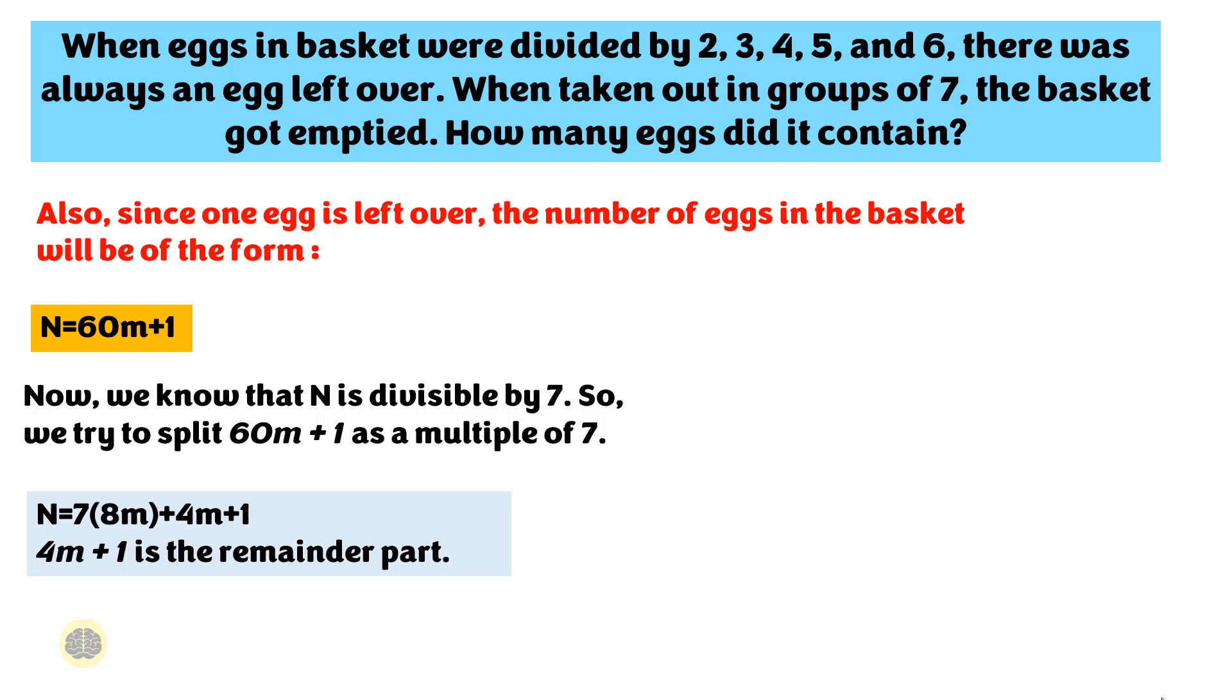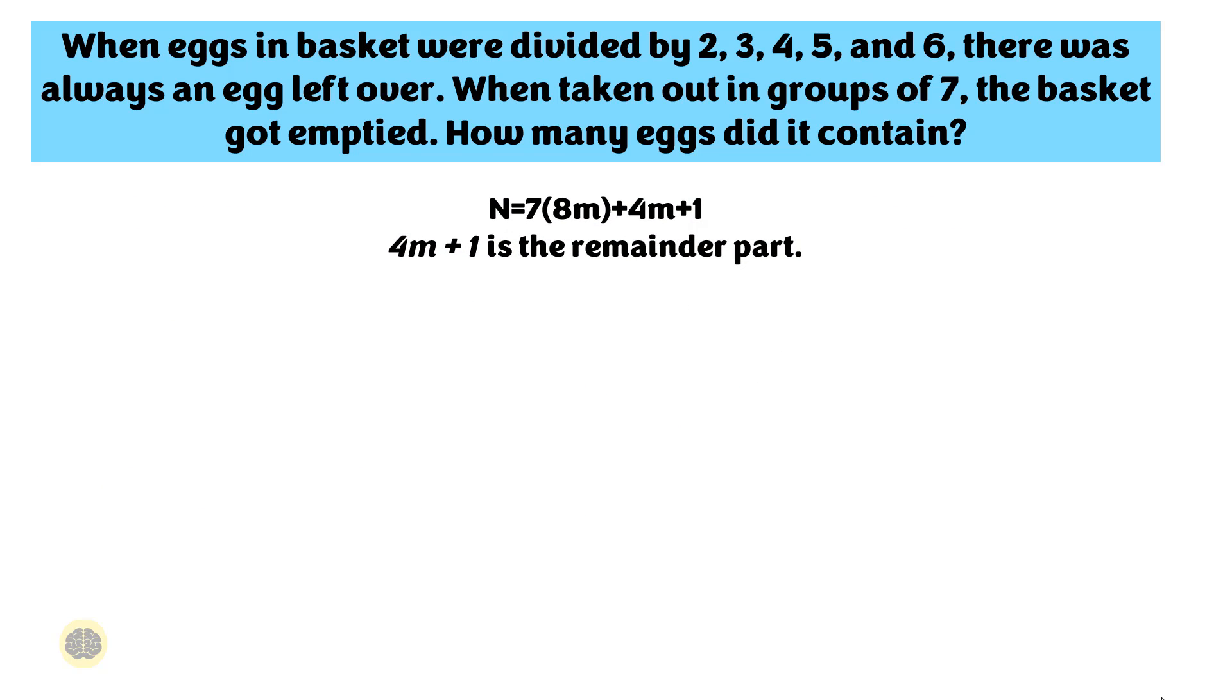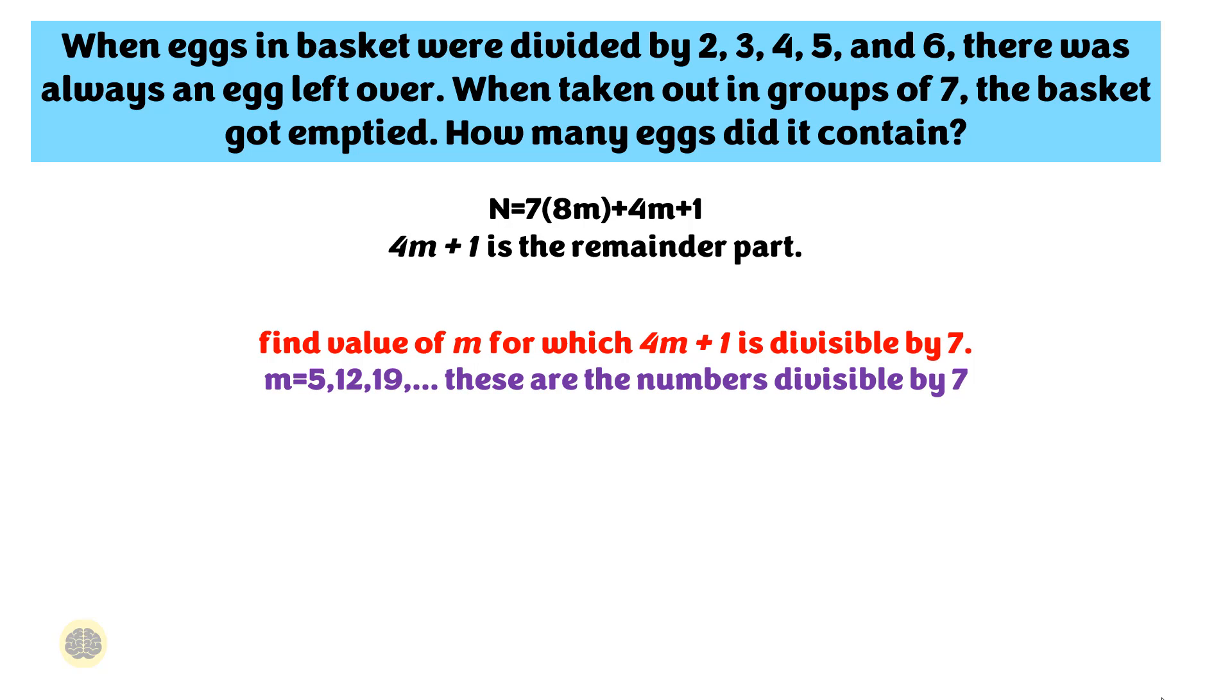We have to find value of M for which 4M plus 1 is divisible by 7. So M can be 5, 12, 19 and so on and these are the numbers divisible by 7. Substitute these values and you will get N equals 301, 721, 1141 and so on. So the least number of eggs that are there in the basket are 301.